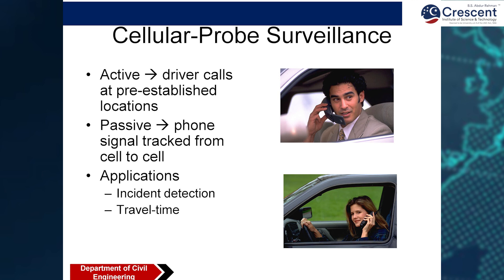Cellular probe surveillance is a very interesting application where you can find out where a driver actually is. When someone calls and says they are very close or coming immediately, your phone's GPS will tell you where they actually are. This application helps find out various incidents in detection and travel time from a particular point to a destination.